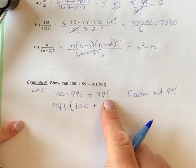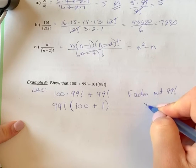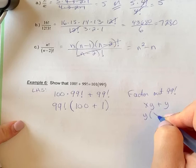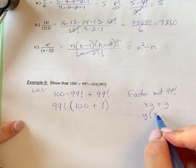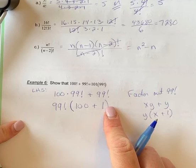Remember when you're factoring out, if I had something like x times y plus y, and I factored out a y, I'm left with the remaining. So 100 would have been what the x was. Don't forget this would have been a 1. That's how come there's a 1 there.